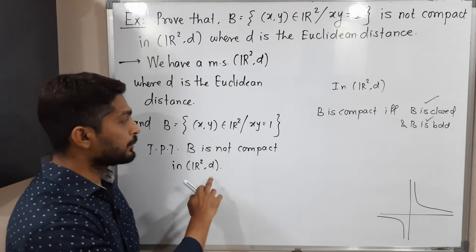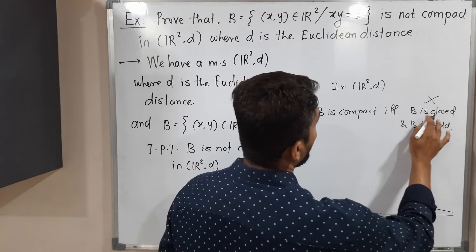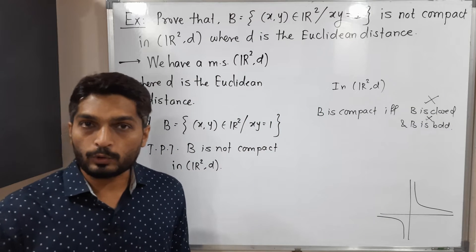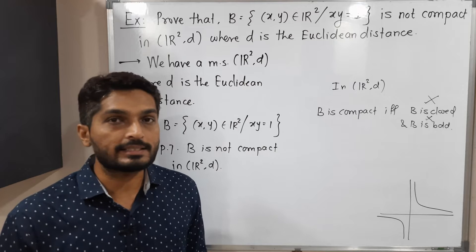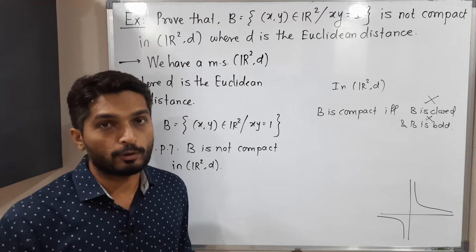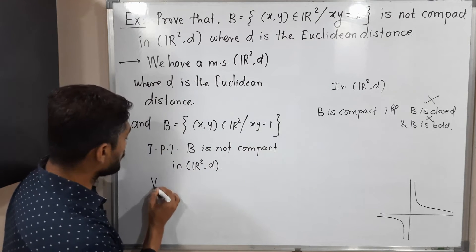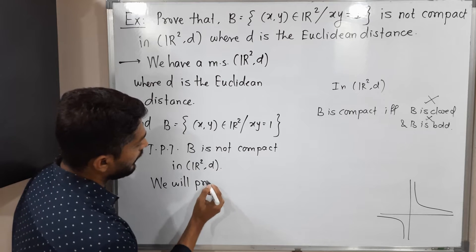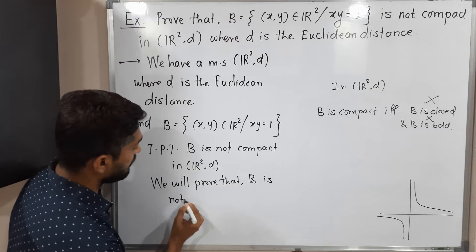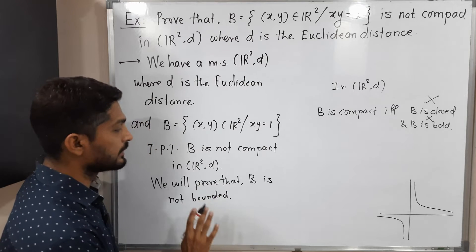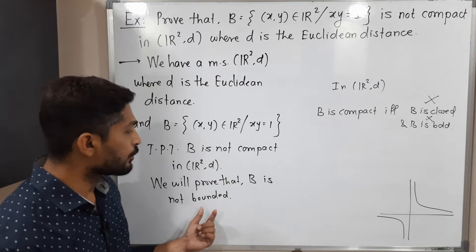To prove the set is not compact, we have to prove either it is not closed or it is not bounded. If we can prove the set is not closed, we can declare it is not compact. Alternatively, if we prove the set is not bounded, we can also say the set is not compact. We will choose the second option: we will prove that B is not bounded. It is enough to prove the set is not bounded, and therefore we can directly declare it is not a compact subset of R²D.